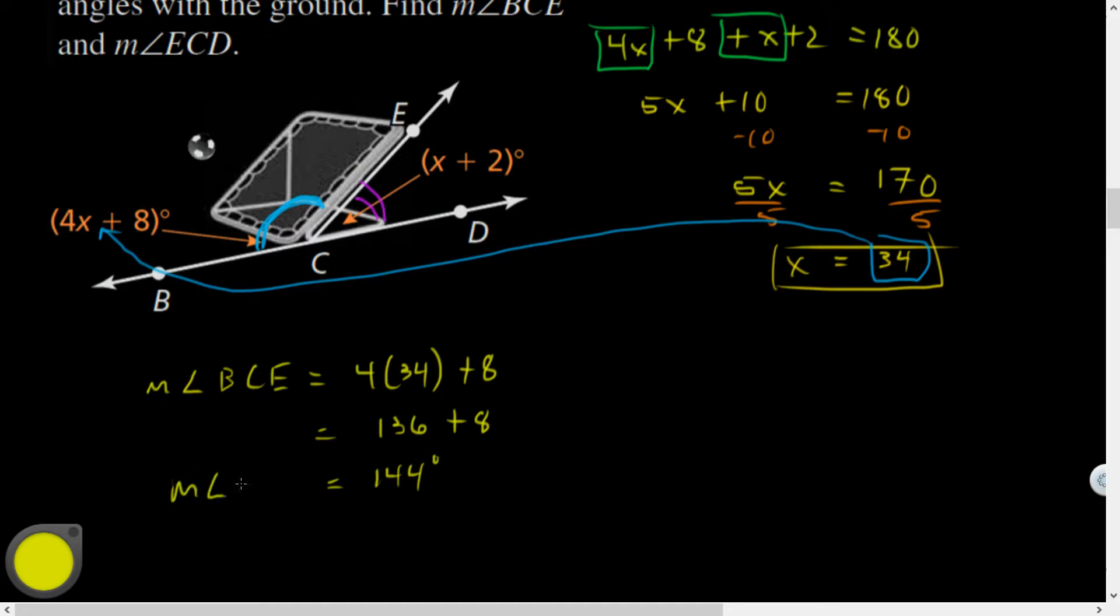So measure of angle BCE. Found it. And I could substitute 34 into that. Actually, that looks easier than subtracting 144 from 180. So measure of angle ECD is just going to equal, yeah, 34 plus 2.